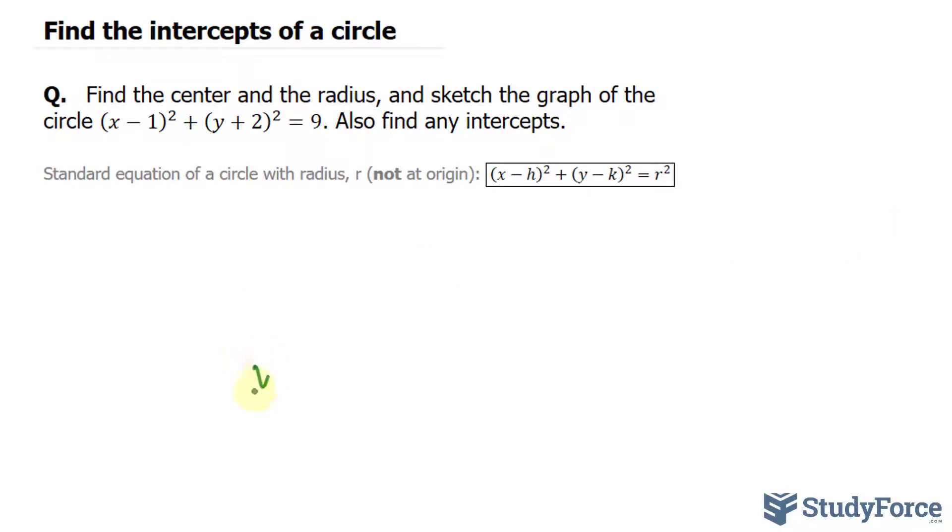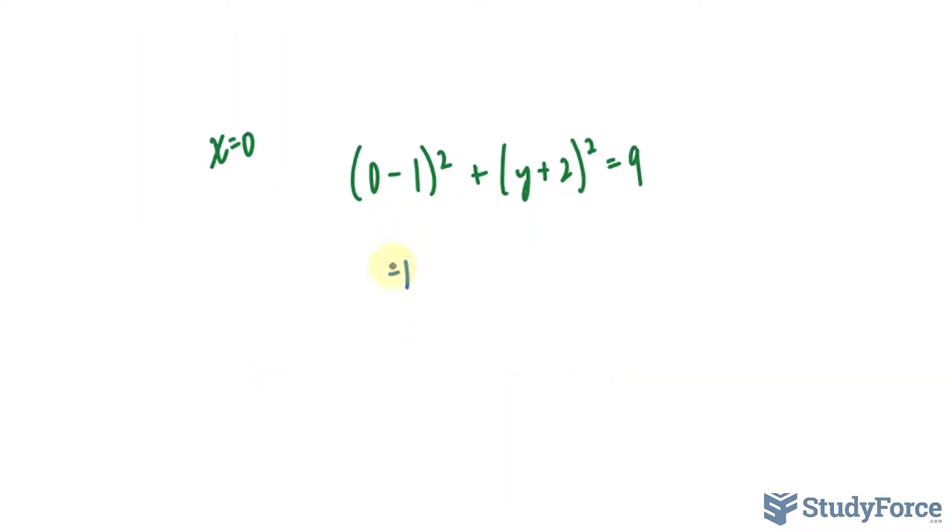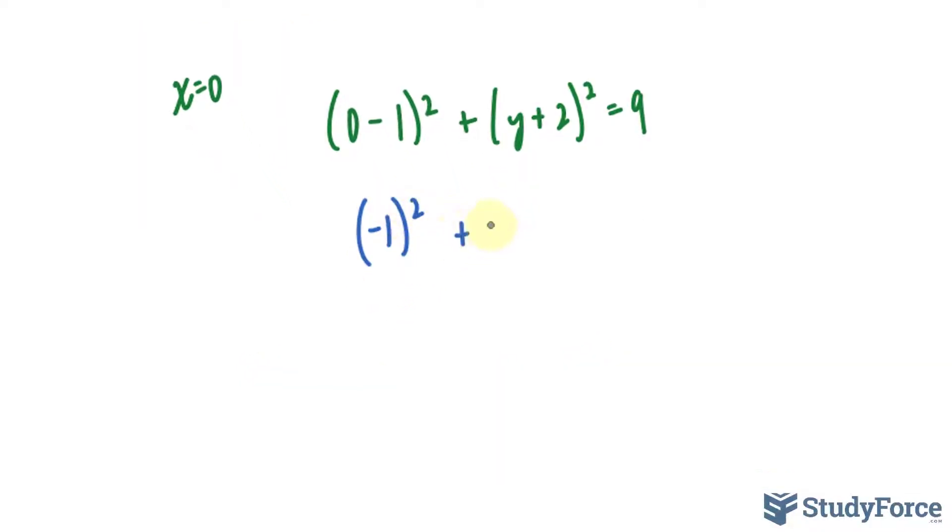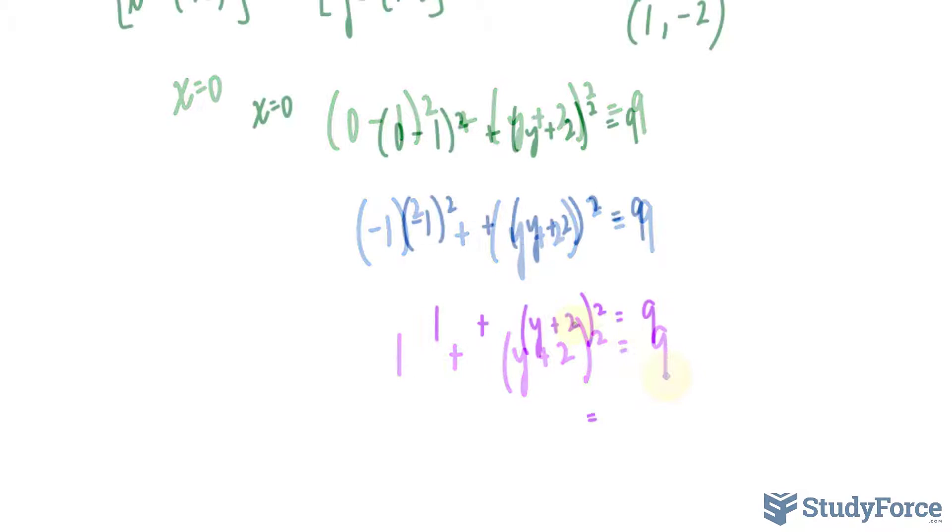Let's go ahead and do that. So I'll set x equals 0. And if I do that, I end up with (0 minus 1) squared plus (y plus 2) squared equals 9. This part is negative 1 raised to the power of 2 plus (y plus 2) squared equals 9. Simplifying further, 1 plus (y plus 2) raised to the power of 2. Bring in that 1 over, 9 minus 1 is 8.